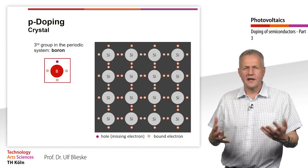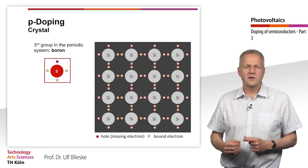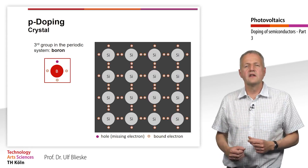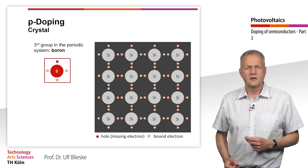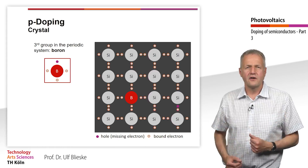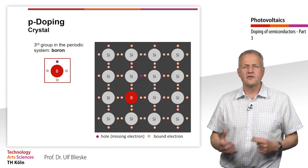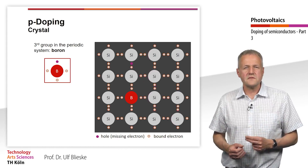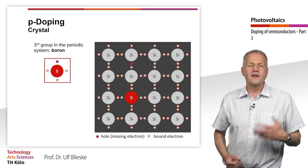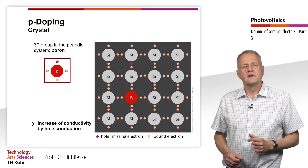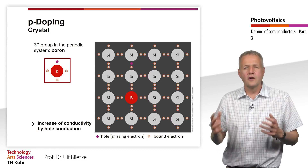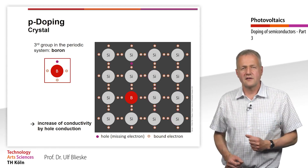If the base material — here again our silicon crystal — is mixed with elements each of which has one electron less in the outer shell, this is called positive doping. Boron has three valence electrons, which is one electron less than the silicon atoms in the silicon crystal lattice. The conductivity of the semiconductor crystal increases; however, the conductivity is lower than in the n-doped semiconductor.